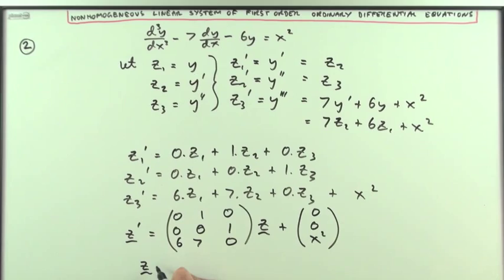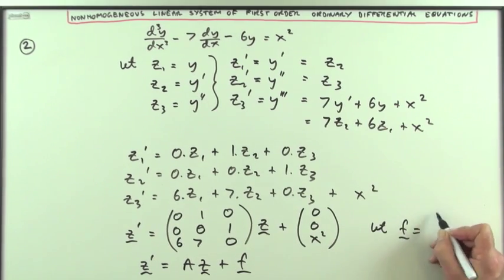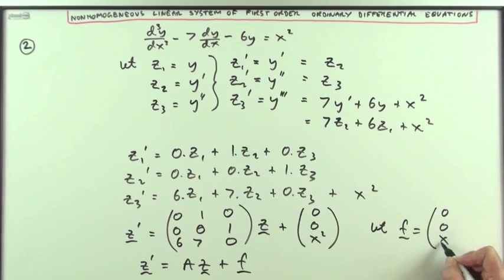There's the system of equations that we're now going to solve using the linear algebra. Just rewriting that as z dashed equals Az plus f, where f equals this. So let f equal the set of the functions which were on the right hand side of the equation.